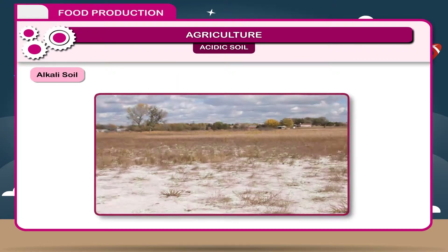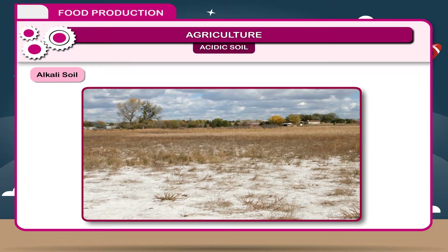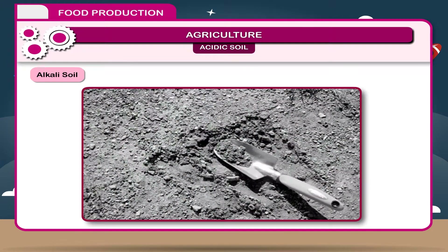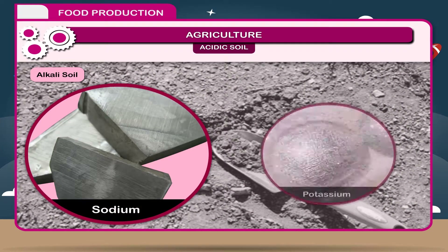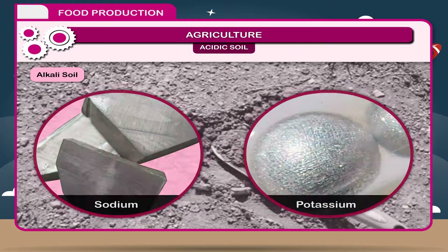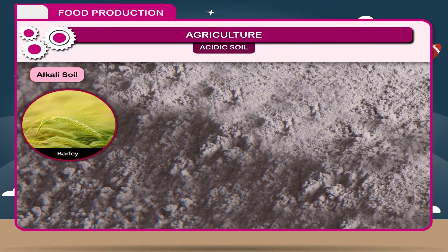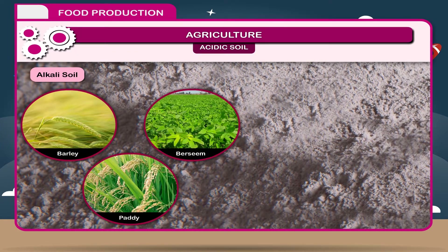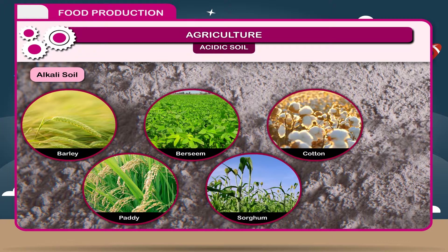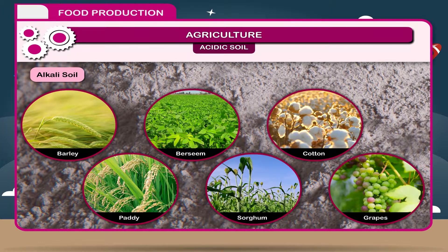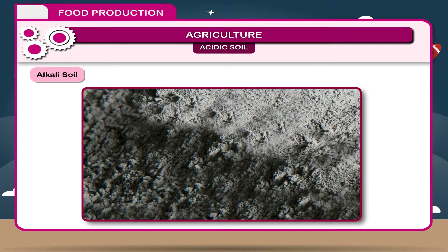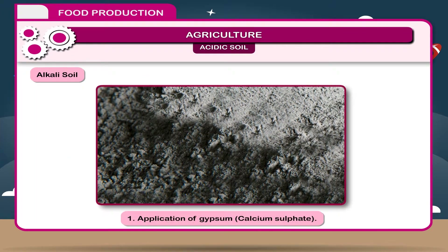Alkali Soil: These are mostly whitish and commonly known as usar. This soil has pH more than 7. The percentage of alkalized salts — sodium and potassium — is more. This soil is not good for agricultural crops, but certain crops can be grown such as barley, paddy, bursim, sorghum, cotton, grapes, etc. Alkalized soil can be reclaimed by the following methods.